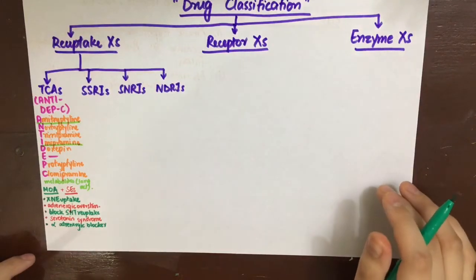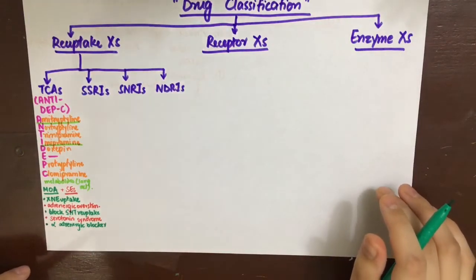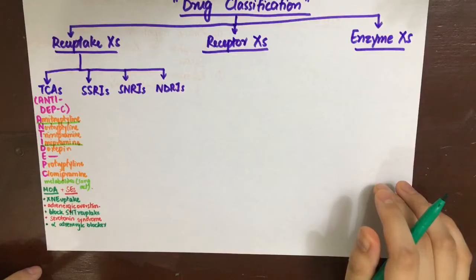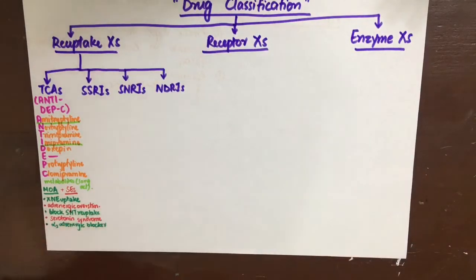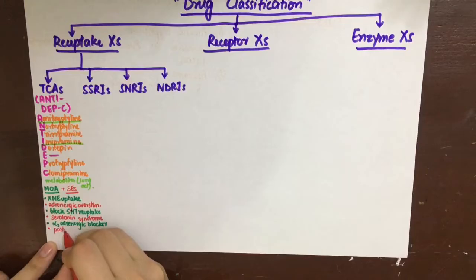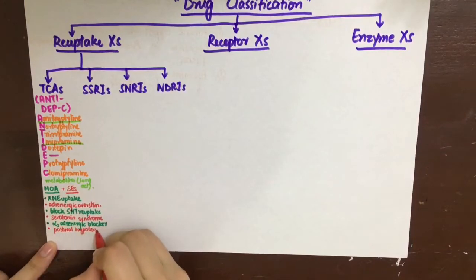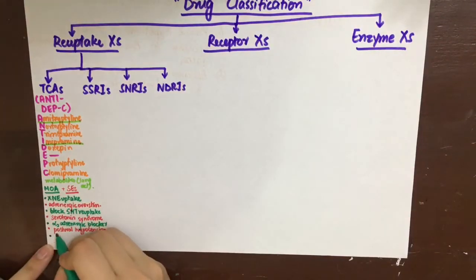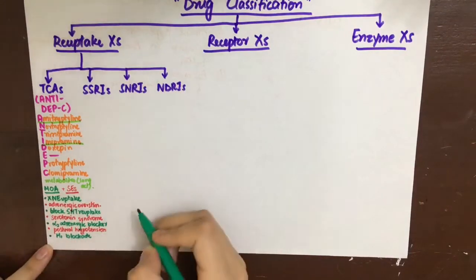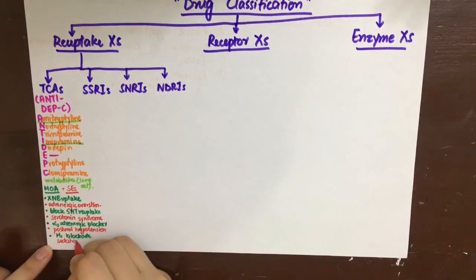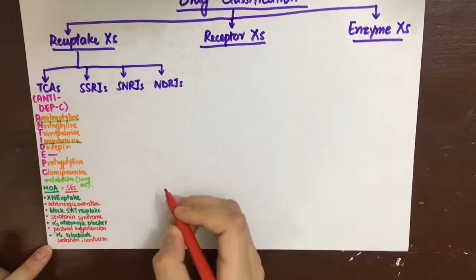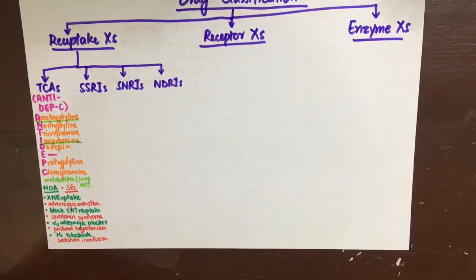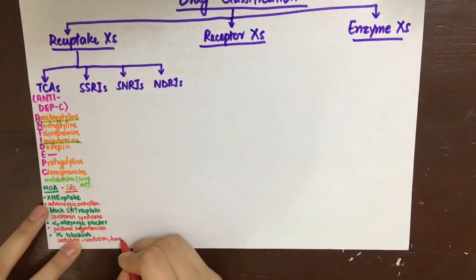Apart from these two actions, inhibited norepinephrine reuptake and inhibited serotonin reuptake, they have three unwanted actions that produce undesirable side effects. First is alpha-1 adrenergic blockade, second is H1 blockade, and thirdly, M blockade. The alpha-1 adrenergic blockade will cause vasodilation and thus postural hypotension leading to reflex tachycardias and even cardiac arrhythmias. The H1 blockade will cause sedation.